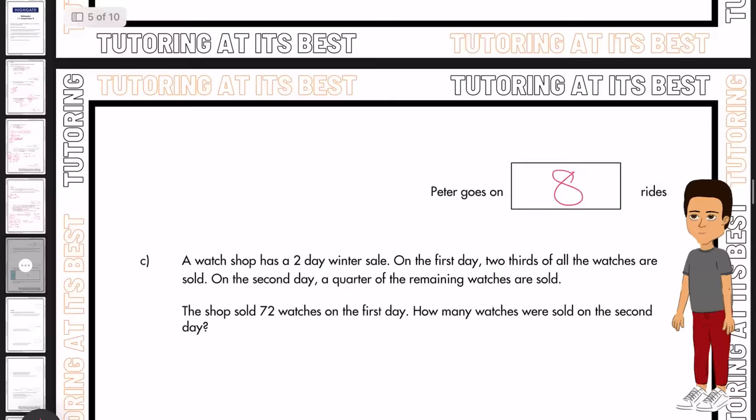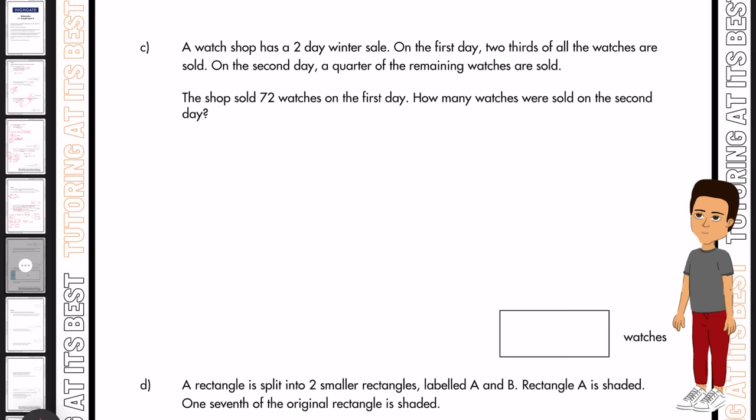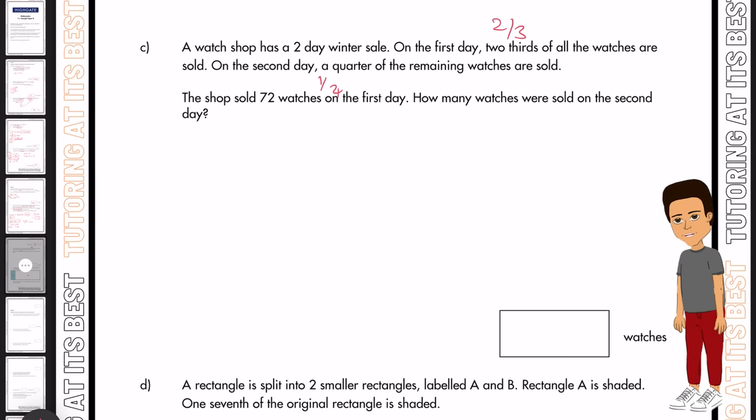Let's move over to part C. A watch shop has a two day winter sale. On the first day, two thirds of all watches are sold. And on the second day, a quarter of the remaining watches are sold. Now the shop sold 72 watches on the first day.